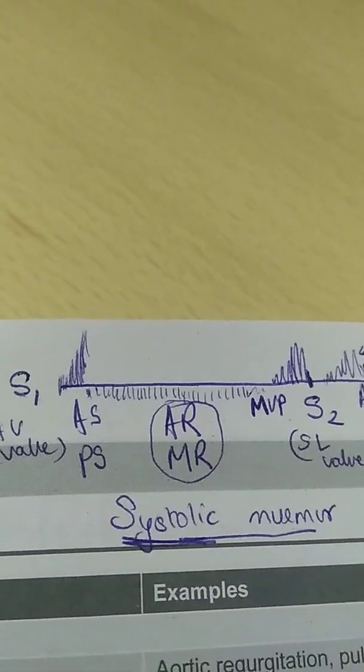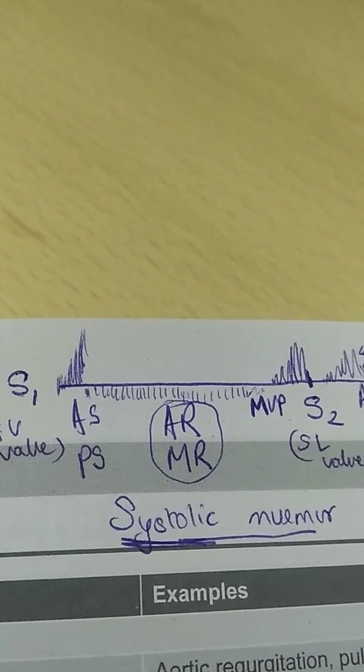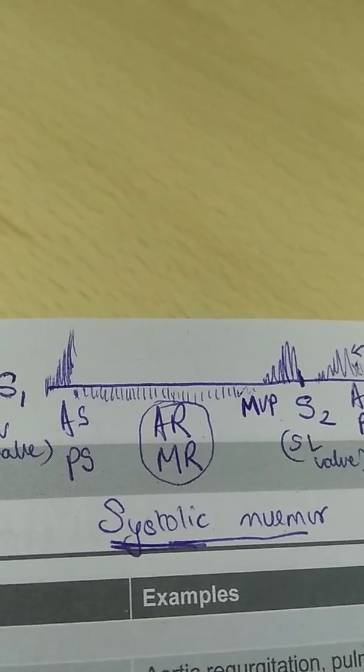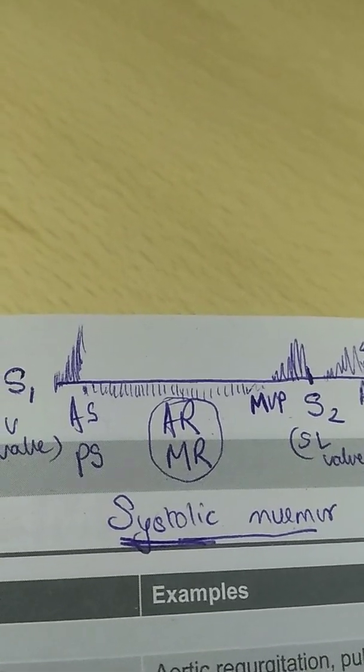To summarize, systolic murmur takes place between S1 and S2, that is during ventricular systole. Early systolic period in aortic and pulmonary stenosis, late systolic in MVP, holosystolic in aortic and mitral regurgitation.